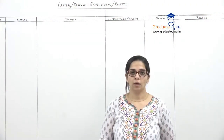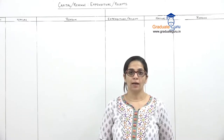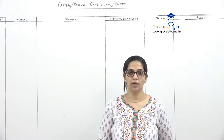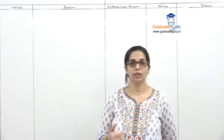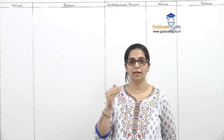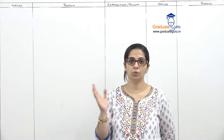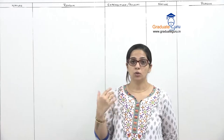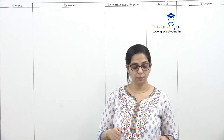Hi students, welcome to another session at Graduate Group. Our topic right now is capital, revenue, expenditure, and receipts or income. Last time we discussed two sums where we classified different items into capital, revenue, expense, income, and receipts. Same thing we are going to do in question number 3. So let's begin.